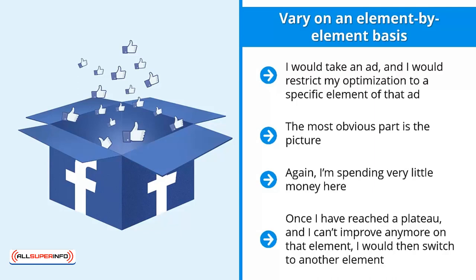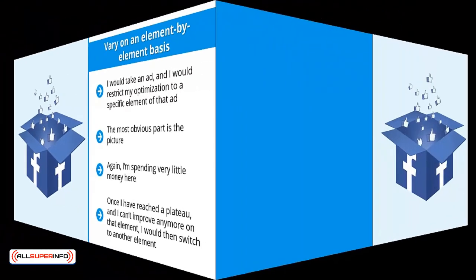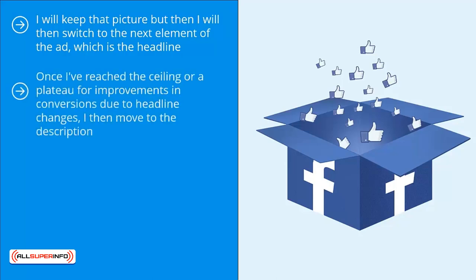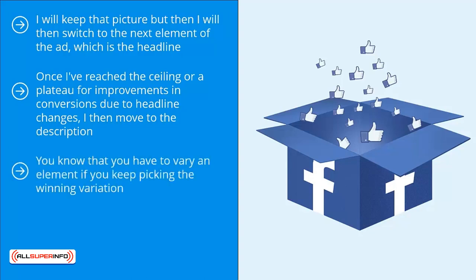Once you've reached a plateau and can't improve any more on that element, switch to another element. For example, if running a campaign for dog food and your best-performing picture is a smiling chihuahua, keep that picture and move to the next element: the headline. Keep varying the headline to improve conversion rate until you hit a ceiling, then move to the description. You vary an element, pick the winning variation, and do this with small tests until the whole ad is optimized.